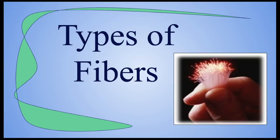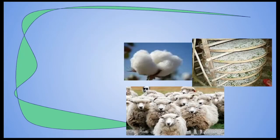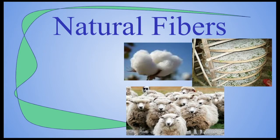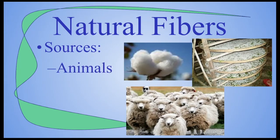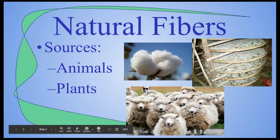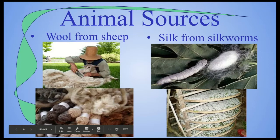There are different types of fibers. We start with natural fibers. Natural fibers are fibers that occur naturally and we can harvest and use them. They come from animals and from plants — those are two different sources of our natural fibers. So we've got the fluff of cotton, silk from silkworms, wool from sheep, and flax as well.